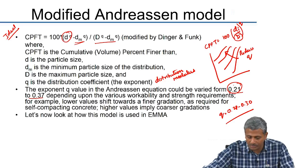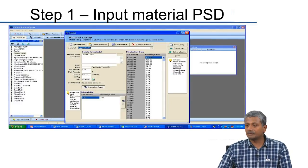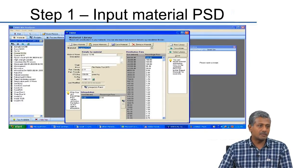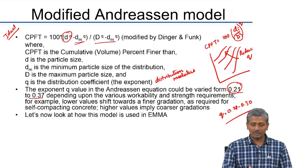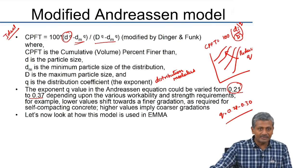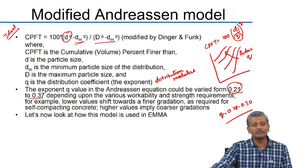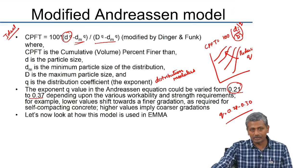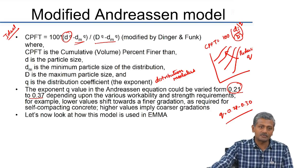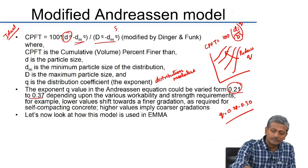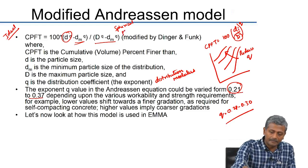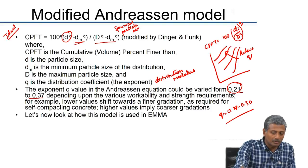Let us see how EMA is used. This is the software interface for EMA. One important note — as far as the modified Andreessen model is concerned, this fitting is done based on an assumption that all particles are spherical. We are not considering the angularity of particles here. Practically we use mostly angular aggregates, and this equation will not be completely satisfied for angular aggregate systems. There are some discrete particle packing models better suited for angular aggregate systems, and in fact there are models that combine particle packing and rheology together.